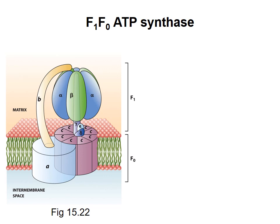A few things to note. Eight identical transmembrane C subunits are arranged in a cylindrical ring. Three alpha and three beta subunits of F1 also come together in a ring-like structure. Joining these two rings in the so-called central stalk is the long skinny gamma subunit, which contacts the top part of the C subunit cylinder and extends into the center of the alpha-3 beta-3 cluster. The alpha-beta cluster is also contacted by the B subunit, which makes a second or peripheral stalk connecting the alpha and beta subunits to the FO sector.